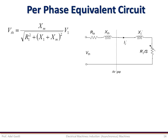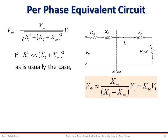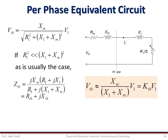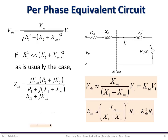The voltage V_Thevenin is calculated using the corresponding equation. If the stator resistance R1 is very small compared to the sum of reactances X1 and XM, which is usually the case, then V_Thevenin is approximately XM/(X1+XM) × V1, and is always smaller than V1. The Thevenin impedance is given by a corresponding equation. Considering R1 small compared to X1+XM, we get R_Thevenin, and since X1 is very small compared to XM, X_Thevenin ≈ X1. After determining the Thevenin parameters of the stator side, we can use the simplified equivalent circuit to calculate the rotor current and motor performance.